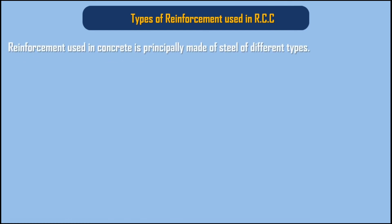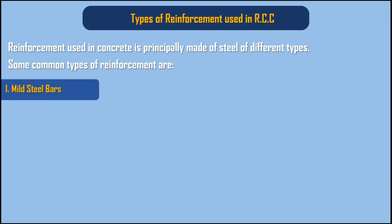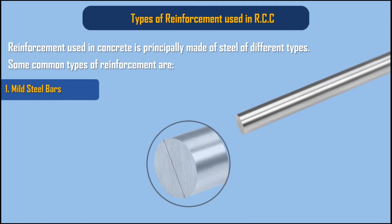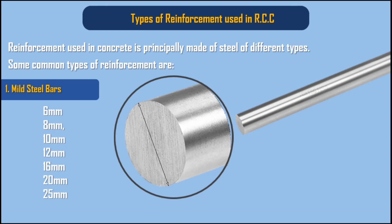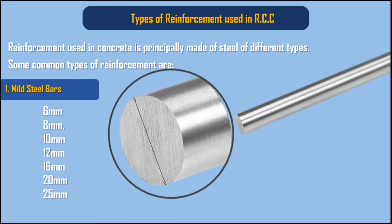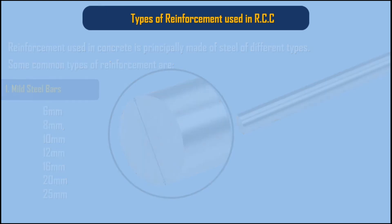Types of reinforcement used in RCC: Reinforcement used in concrete is principally made of steel of different types. Some common types are: 1. Mild steel bars — these come in various diameters and are required to possess a characteristic strength in tension. The steel bar used as reinforcement can be commonly bent easily without cracking at the bends.